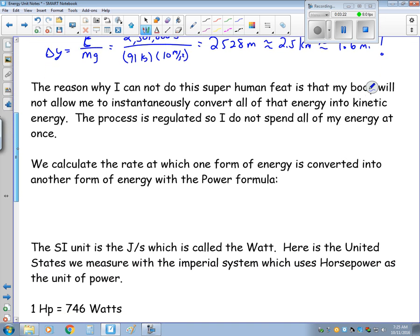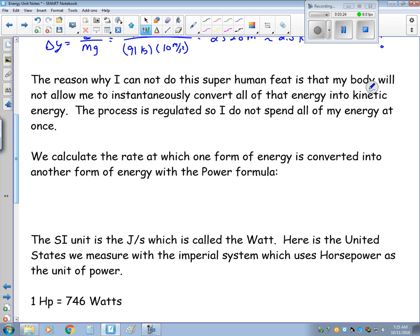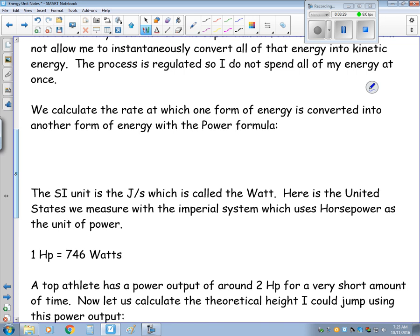The way we calculate this rate is something we call power. Power being a rate is the derivative of the work function with respect to time. What that means for us is that power equals change in work over change in time, or we can simply write it as power equals energy over time. That means that for power, its unit will be a joule per second, which is what we call a watt.